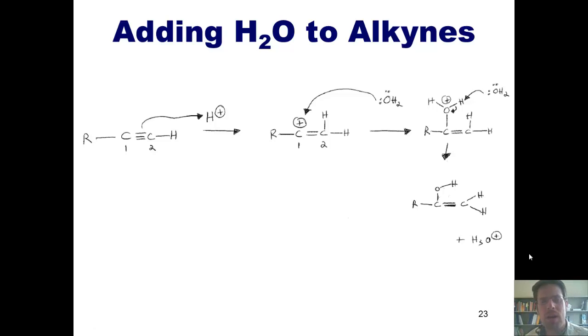Now, I want to point out something very, very important. This type of product right here is called an enol. The reason is because it has an alcohol and an alkene together in one molecule. We take the word alkene and the word alcohol and squish them together into one word. The word is enol.